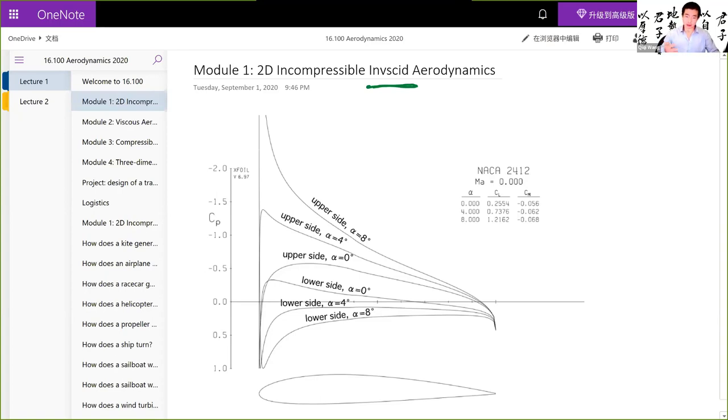So although this set of assumptions, we are assuming the flow does not have any viscosity, is incompressible, is strictly two-dimensional, that seems pretty restrictive.